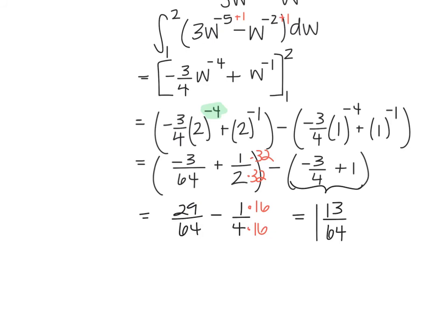Getting a common denominator of 64: negative 3/64 plus 32/64 gives 29/64. Then subtracting 1/4 — converting to 16/64 — we get 29/64 minus 16/64, which gives a final exact answer of 13/64.